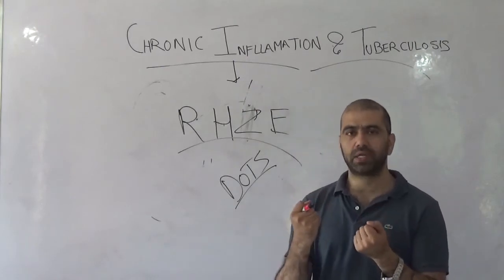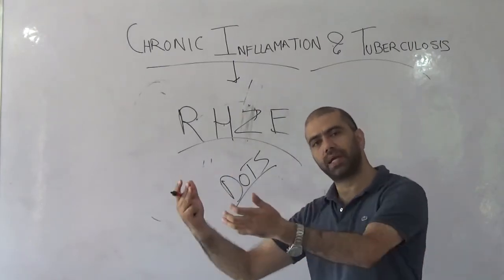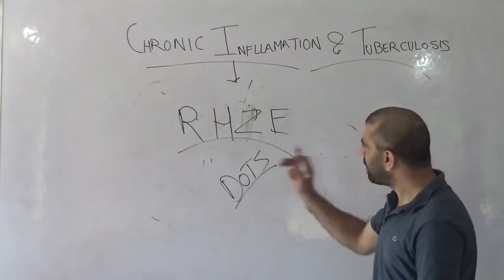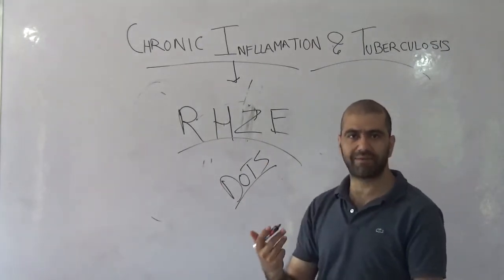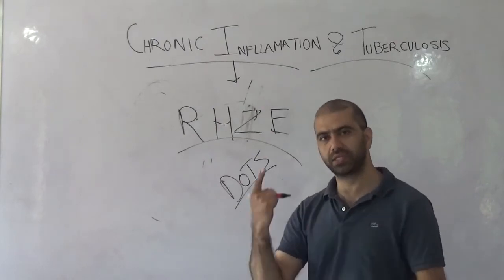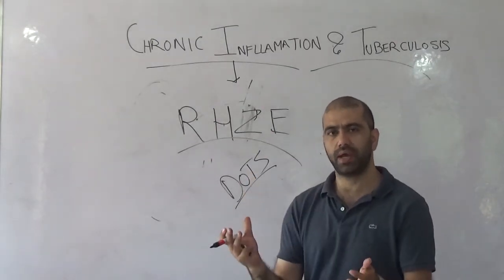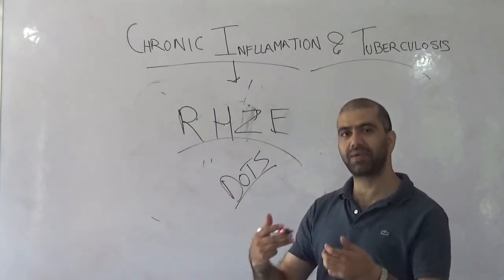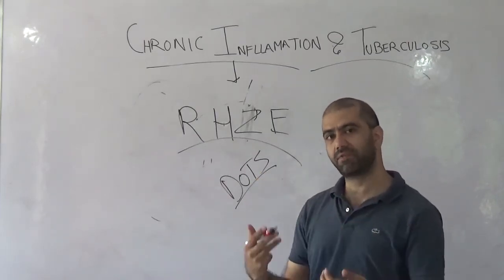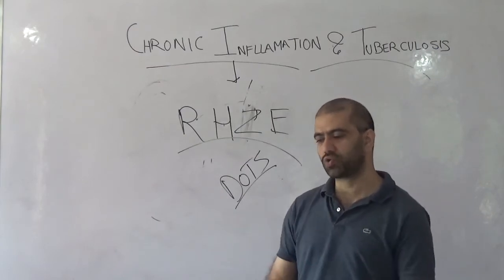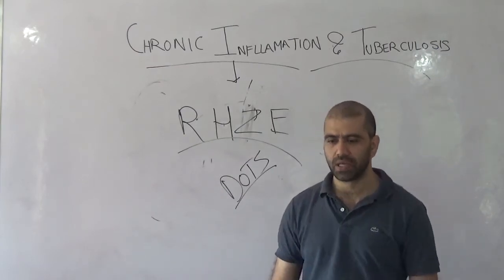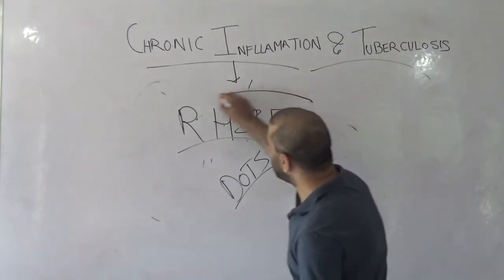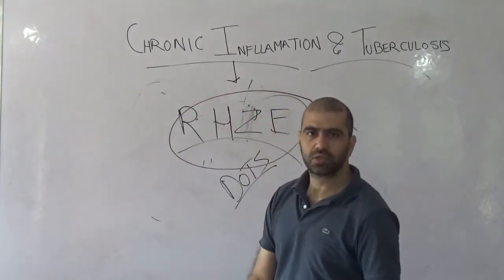Mycobacterium tuberculosis, compared to other bacteria, cannot be cured with a single antibiotic. What was found is that when you start treating tuberculosis with a single drug, it develops resistance to that drug. This happened with streptomycin, the first antibiotic used against Mycobacterium tuberculosis — it developed streptomycin resistance. That is why we have to give drugs in the form of a regimen.